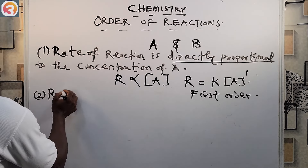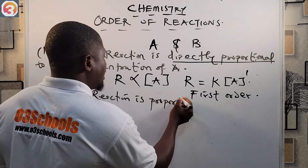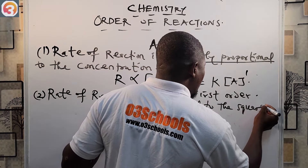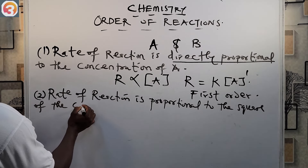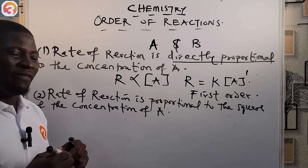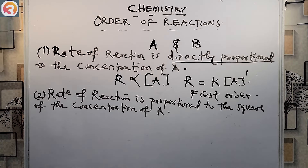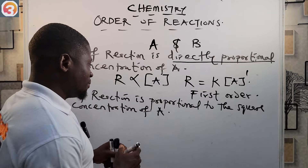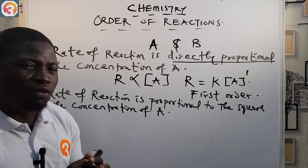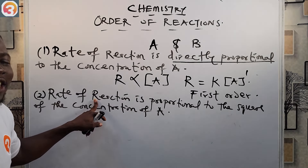A concentration of A standing alone means it is raised to the power of one — anything raised to the power of one does not change it. So R = k[A]¹ — the reaction is first order with respect to A.